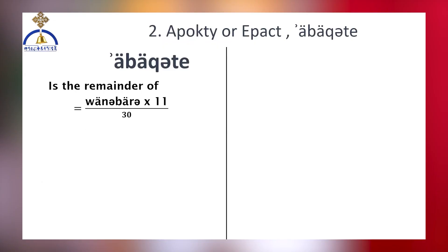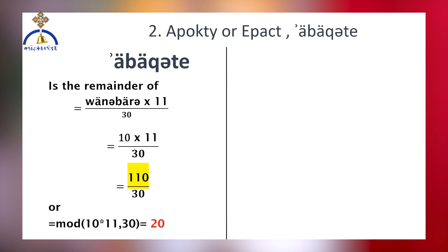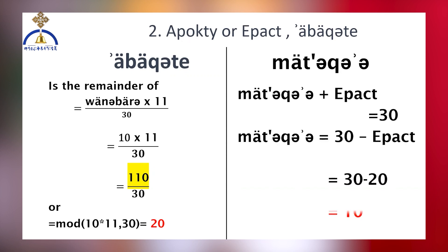This adjustment accounts for the fact that the current year 2016 has just started and is not completed. With the Wembar value known, we can calculate the Epact by multiplying the Wembar by 11, which gives us 110. Then we divide 110 by 30, resulting in an integer value of 3 and a remainder of 20. The remainder 20 becomes the Epact value. Finally, to find the MEDC, the MEDC and Epact values when added together must always equal 30. Therefore, the MEDC for the year is calculated as 10.